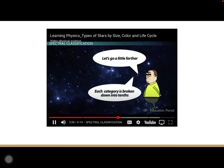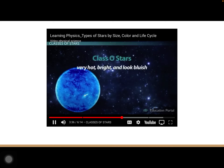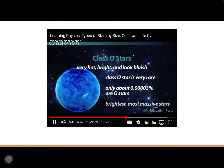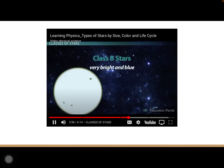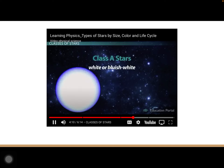These categories can also be broken down into tenths by giving them a number from zero to nine, so an A5 star is five-tenths between an A star and an F star. Class O stars are very hot, bright, and look bluish. They are very rare — only about 0.0003% of main sequence stars are O stars — but they are some of the brightest, most massive stars, shining with over a million times the power of our sun. Class B stars are very bright and blue but short-lived, making up only about 0.13% of all stars.